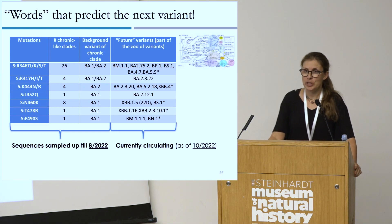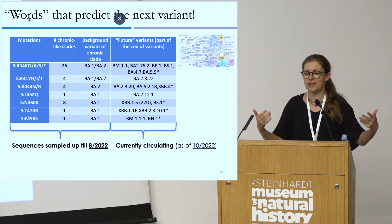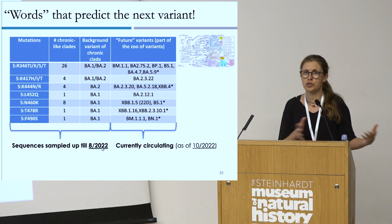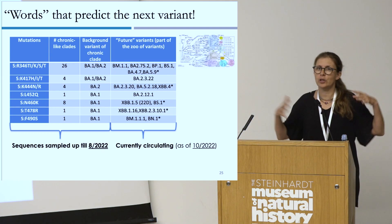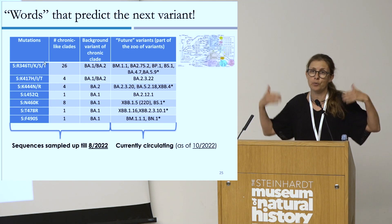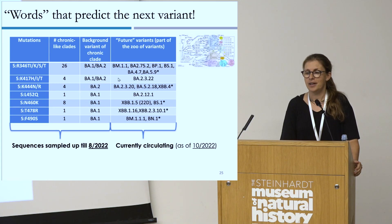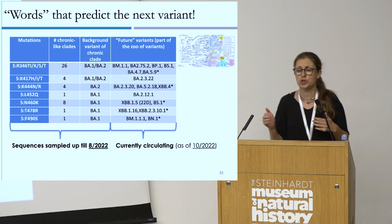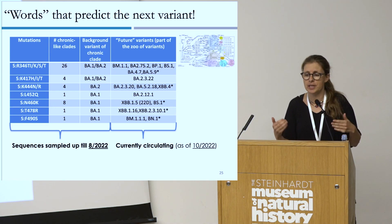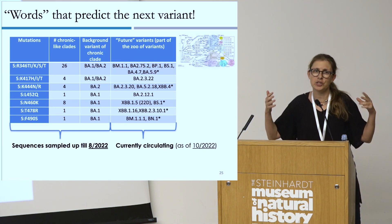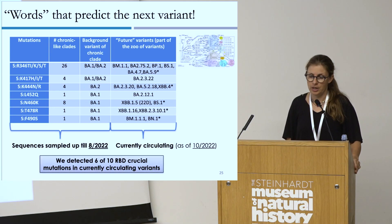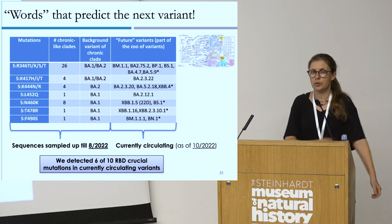Finally, we were able to find mutations that predict the next variant. We only looked at sequences sampled until August 2022. Some of the mutations that the model predicted as very important for the chronic-like state were actually mutations present in the zoo of variants that began circulating in October 2022. We believe this model is able to predict the future — these chronic infections can tell us what mutations are going to appear in the population. We detected six of the ten crucial RBD mutations in currently circulating variants.